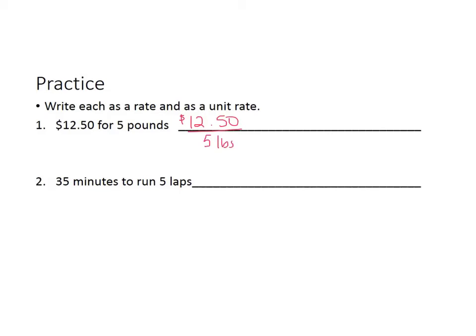And then as a unit rate, you would have to take 12.50 and divide that by 5. Well 5 goes into 12 two times, and then you would get 25. So that would be 5, and so it would be $2.50. So the unit rate would be $2.50 for every one pound.